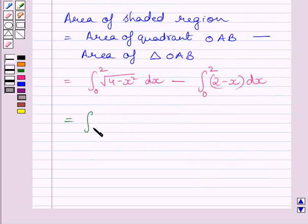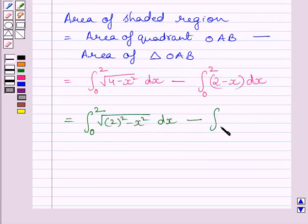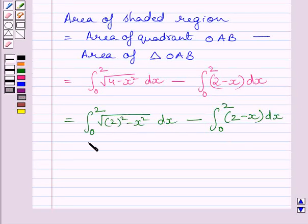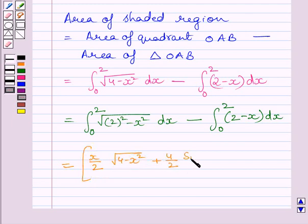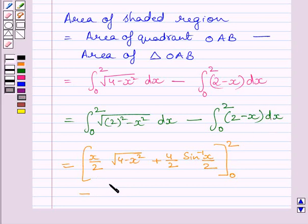We can write the first integral as the definite integral from 0 to 2 of √(2² − x²) dx, and the second integral as the definite integral from 0 to 2 of (2 − x) dx. The answer for the first integral is [x/2 · √(4 − x²) + (4/2) · sin⁻¹(x/2)] with lower limit 0 and upper limit 2. The second integral evaluates to [2x − x²/2] with lower limit 0 and upper limit 2.